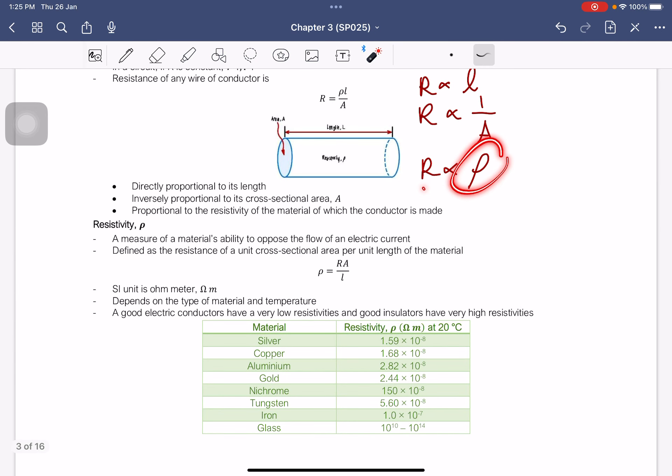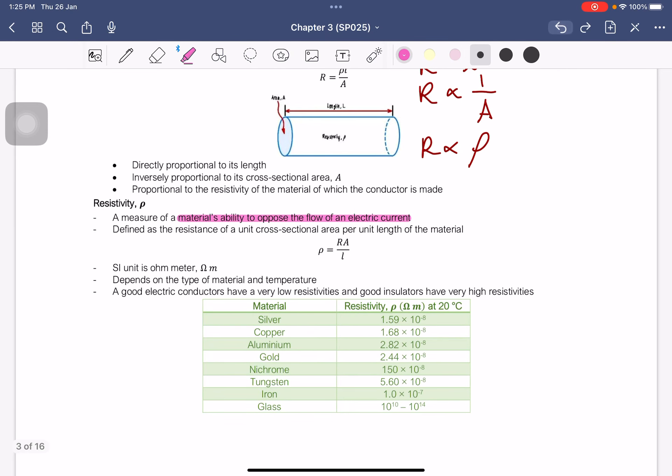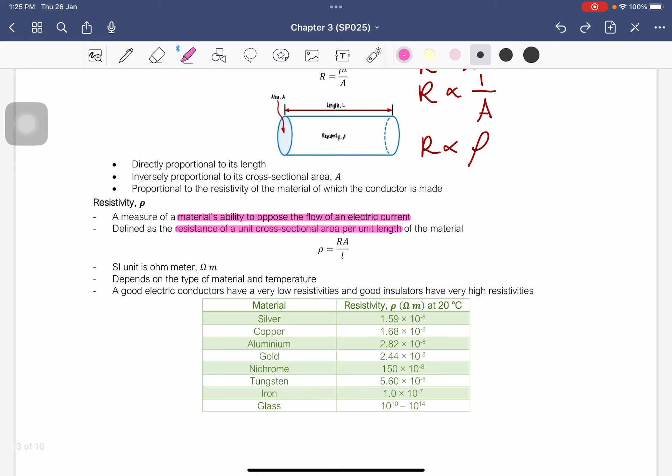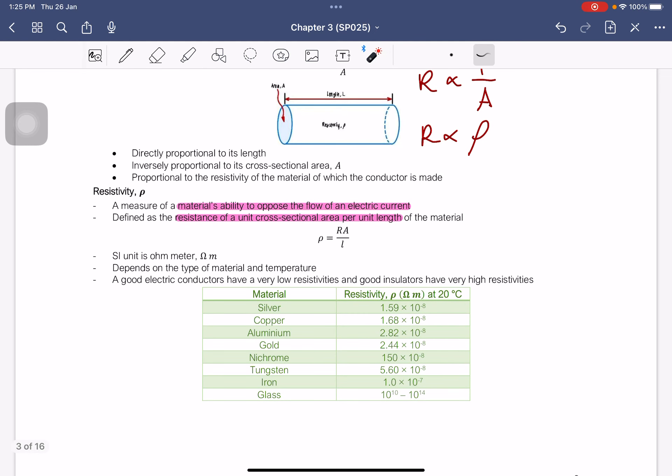Basically, the rho here is the resistivity. So it is a measure of the material's ability to oppose the flow of an electric current. It is defined as the resistance of a unit cross-sectional area per unit length of the material. It's also resistance, but per unit length. So instead of just ohm, it's ohm meter.